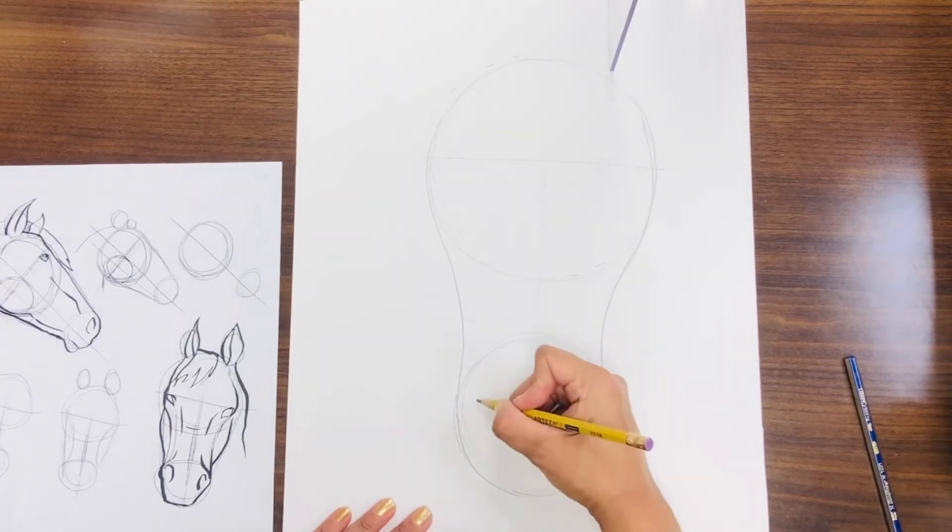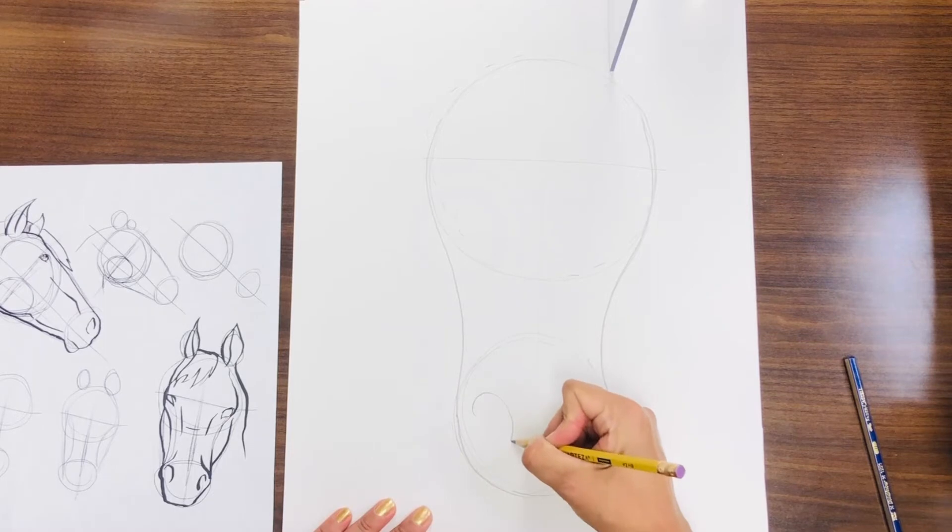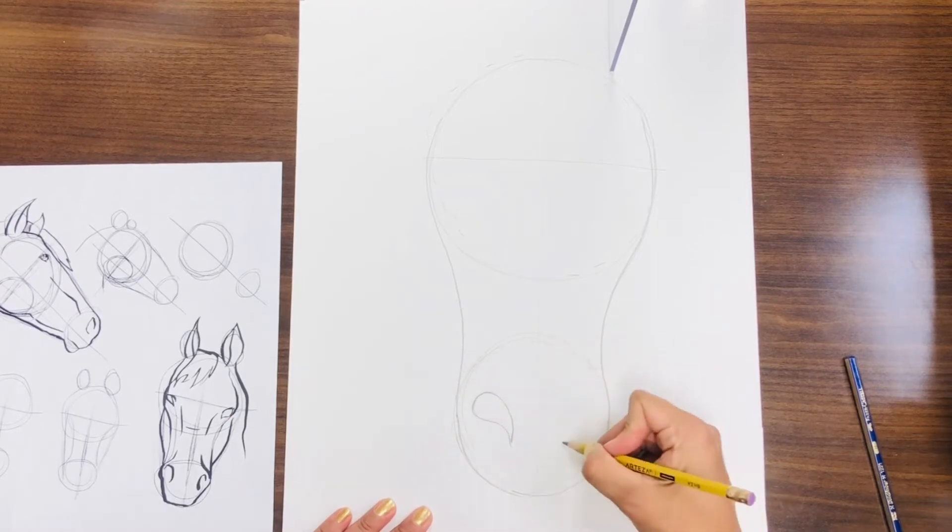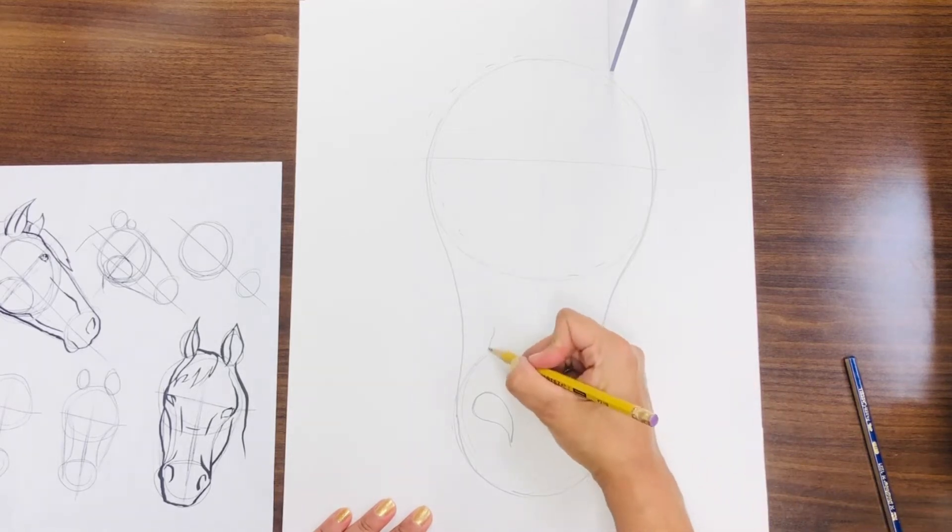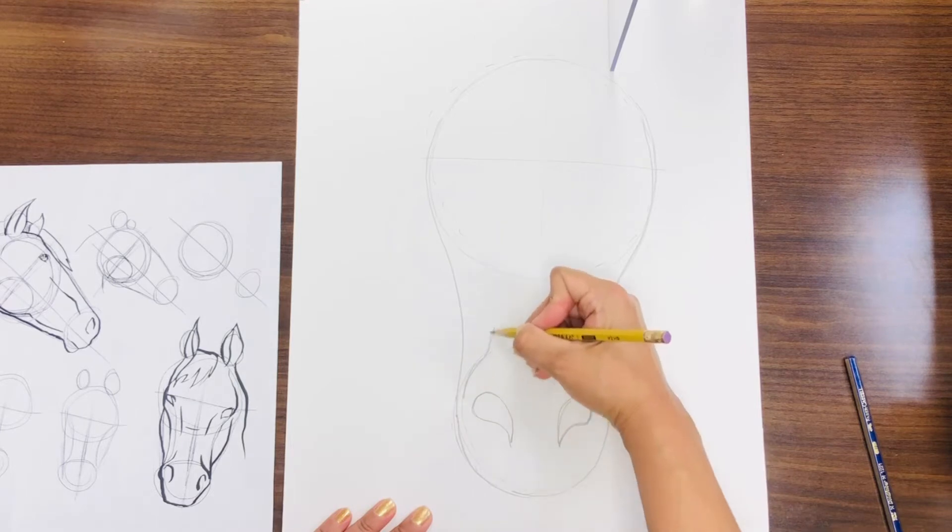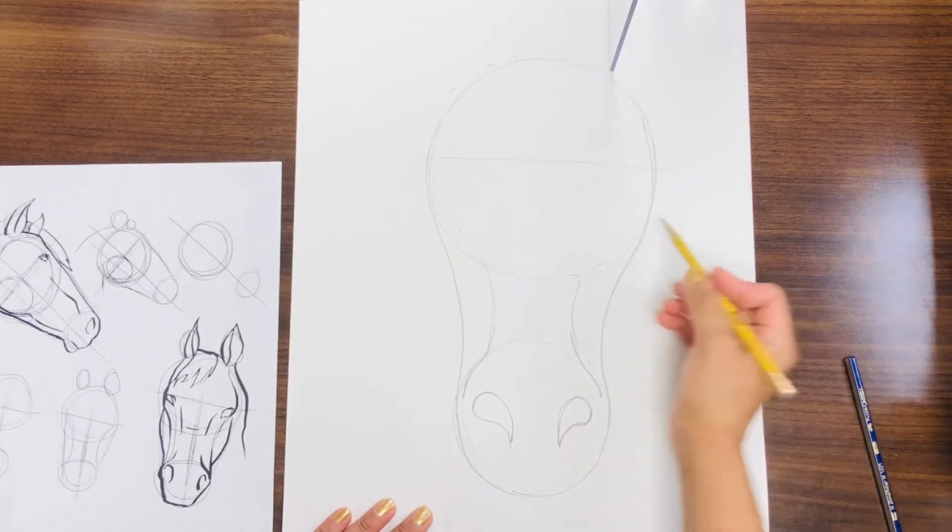Now we are ready for details. Make two nostrils. It kind of looks like a little raindrop or a little yin-yang sign. Make them even. Then make two curves to create the muscle area of the horse's face, the nose area.